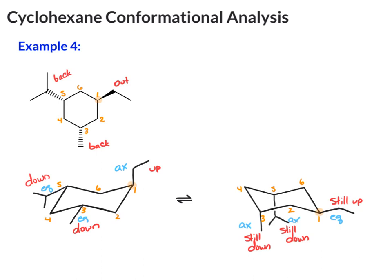So if we compare these, the first chair has two groups equatorial. Also, your largest group, the isopropyl, is equatorial. So that makes this the most stable chair form.